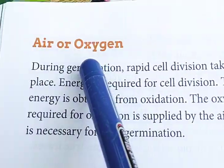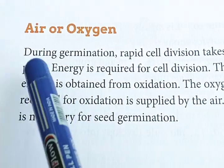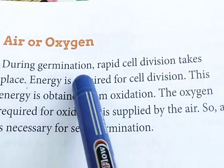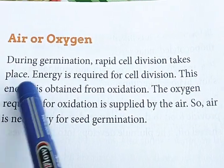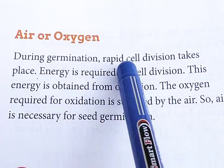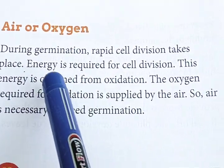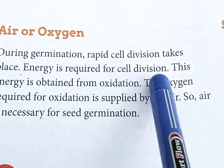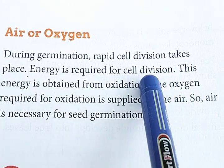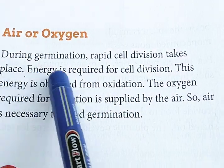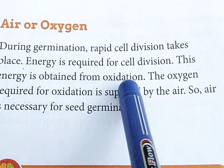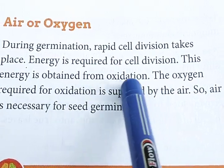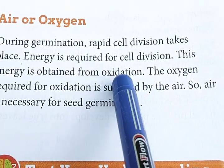Next: air or oxygen. During germination, rapid cell division takes place — very quickly and fast. Energy is required for cell division, and this energy is obtained from oxidation, which means the breaking down of food.